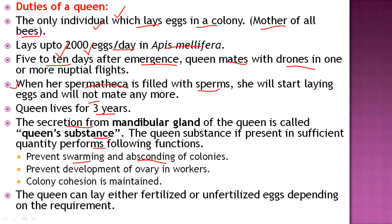Swarming means immediately leaving the hive, which can happen when the queen dies or is unable to lay eggs, or when anything goes wrong inside the hive. The queen substance performs the function of preventing this by maintaining colony cohesion — it signals to the workers that the queen is alive and actively laying eggs.